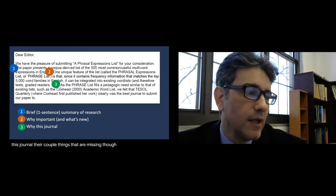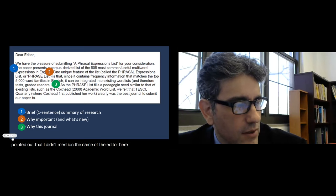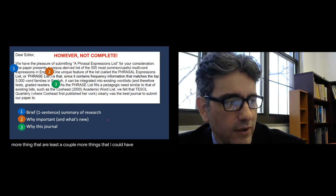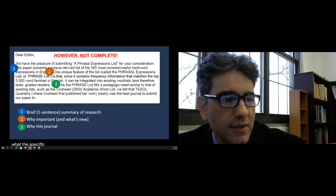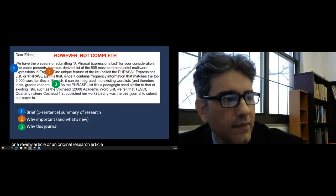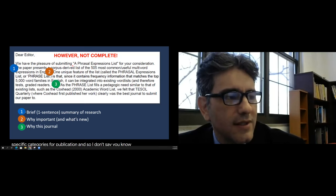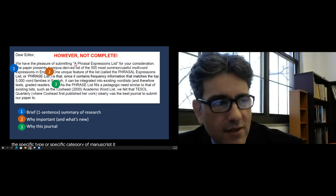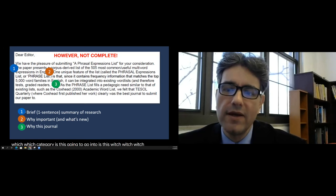You can see the cover letter puts in the title, talks about what it does — different from the abstract in being a one or two sentence summary of what it is and why that matters — then talks about the findings and what's unique, and then why this journal. There are a couple of things missing though: I didn't mention the name of the editor, and I don't specify the manuscript type — whether it's an original article, a review article, etc. — because every journal has specific categories. Not specifying the type makes the editor's job a little harder.